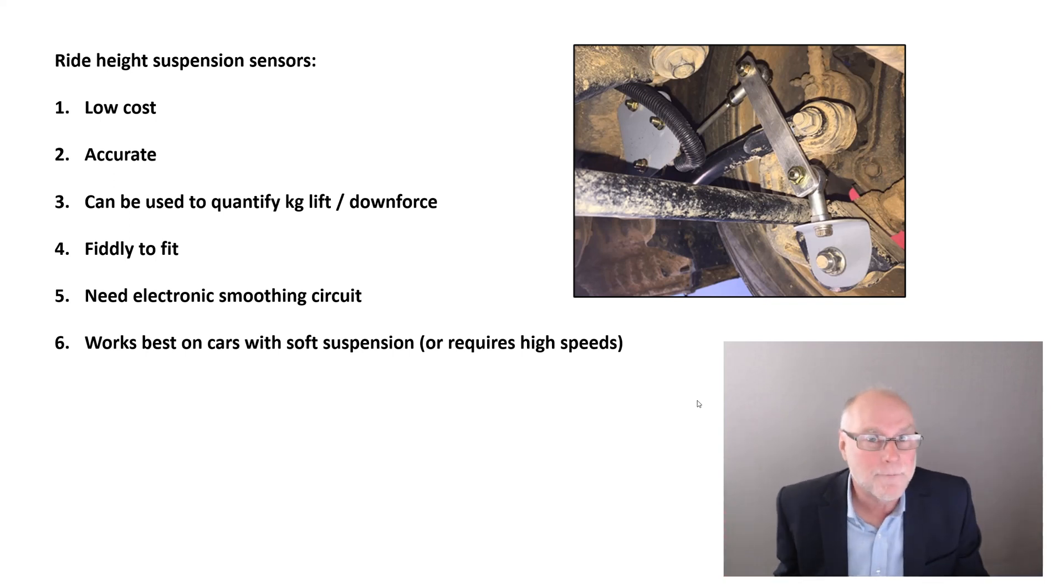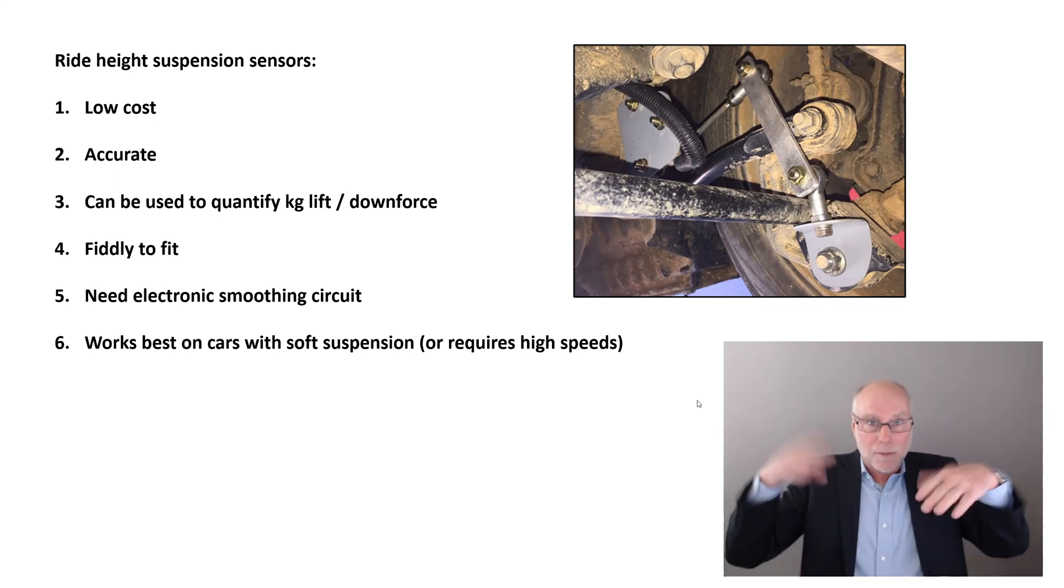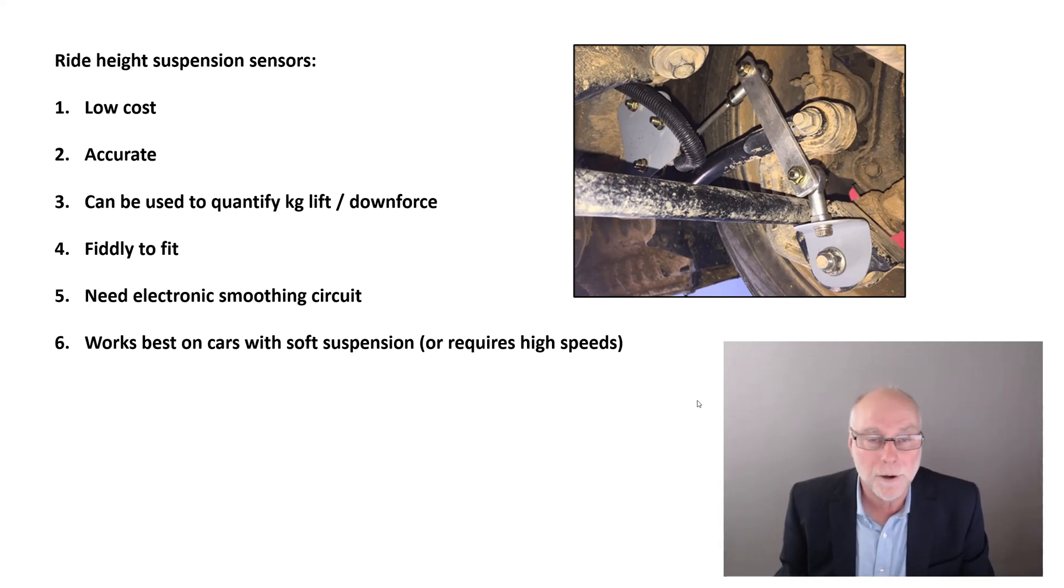They might be low in cost, but they are very accurate. These are linear sensors. They are analog linear sensors, which means they can measure very small variations in height, and they can do it quite accurately. The smoothing circuit takes away all the oscillations of bumps on the road, and you simply measure the output of that smoothing circuit with a multimeter. It's a very accurate way of doing it.